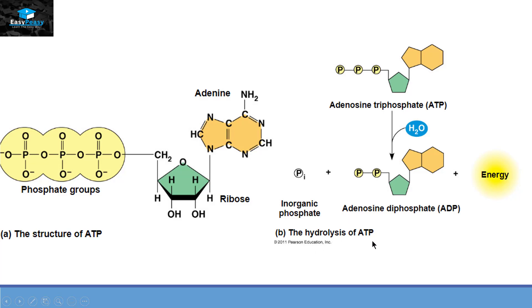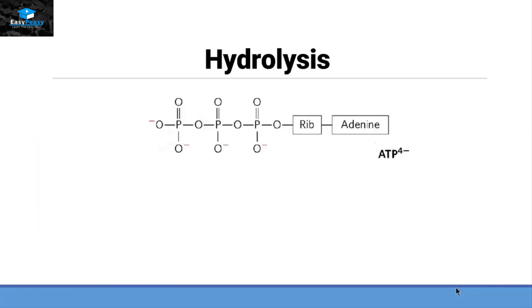This reaction releases energy, so it is exergonic. Now let's see how ATP converts itself into ADP. We have adenosine triphosphate here, and we already know the structure of ATP from the last video. If you didn't watch the last video, the link will be given in the description box.